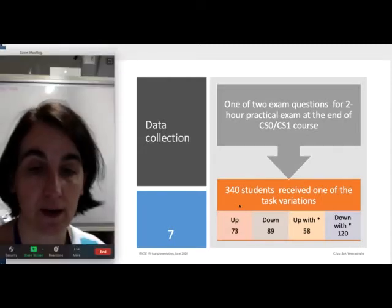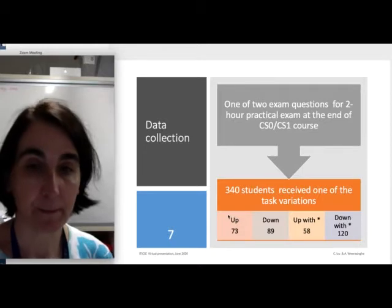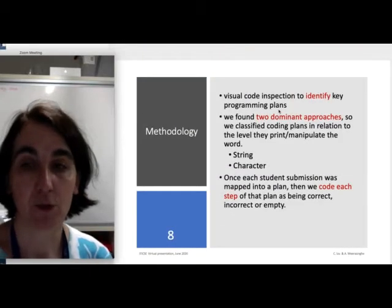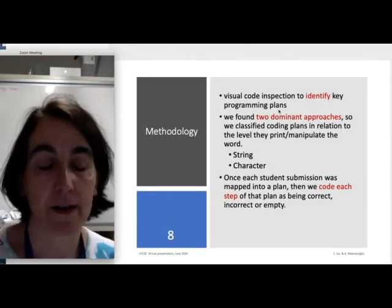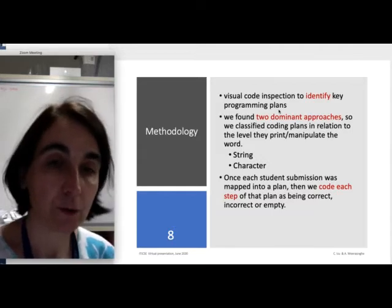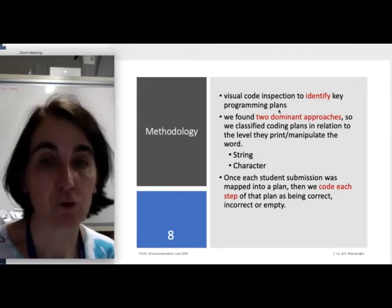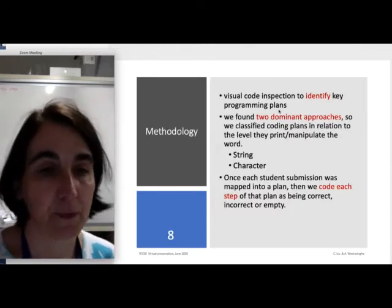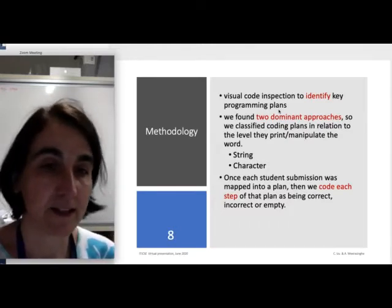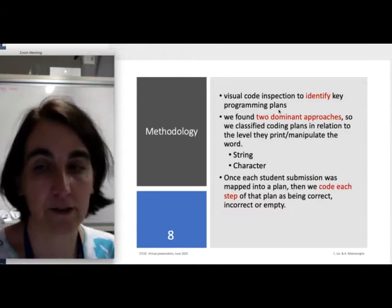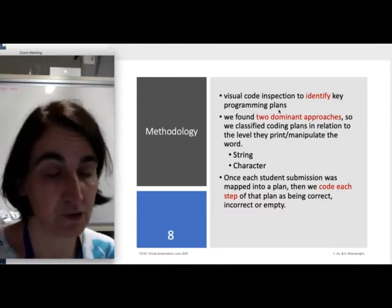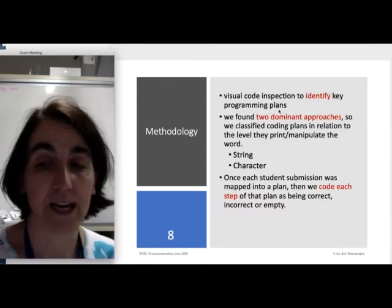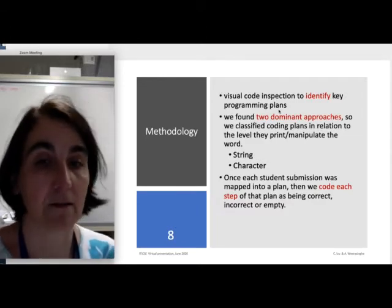We analyzed first the first group by doing a visual inspection of their code and we found there were two dominant approaches. So we classified the coding plans in relation to the level they print or manipulate the word. So they treat it as a full word, as a string, or they treat it as a list of letters, as an array of characters.